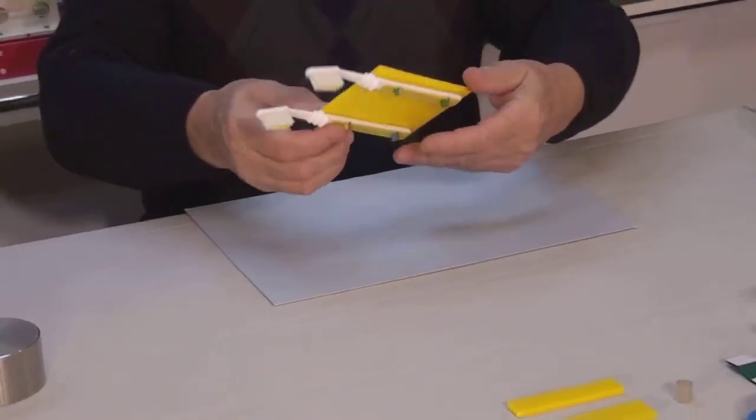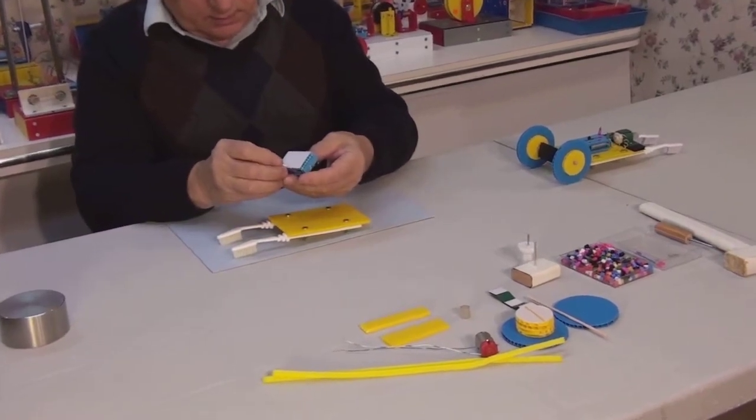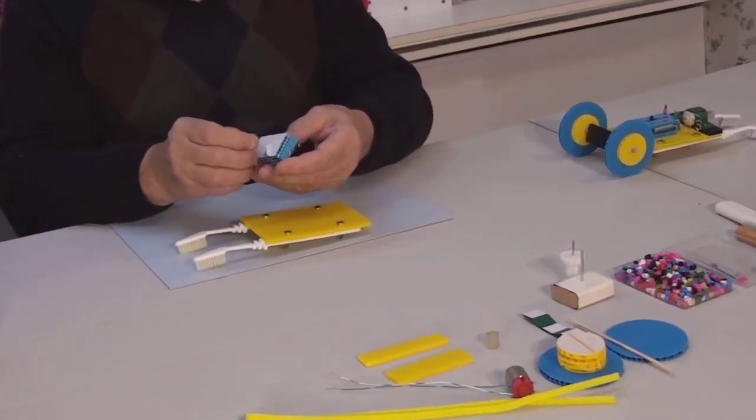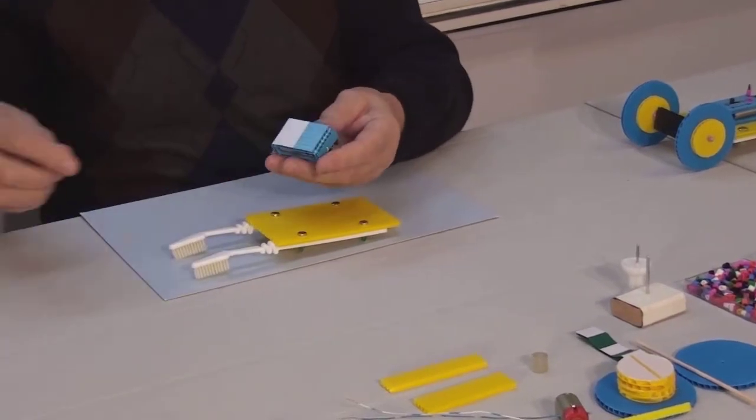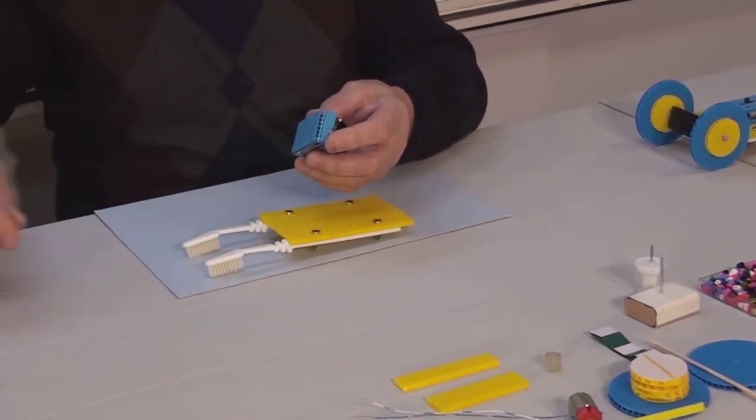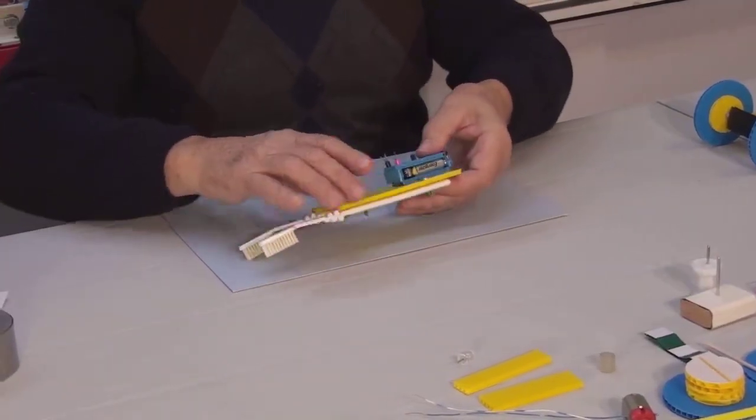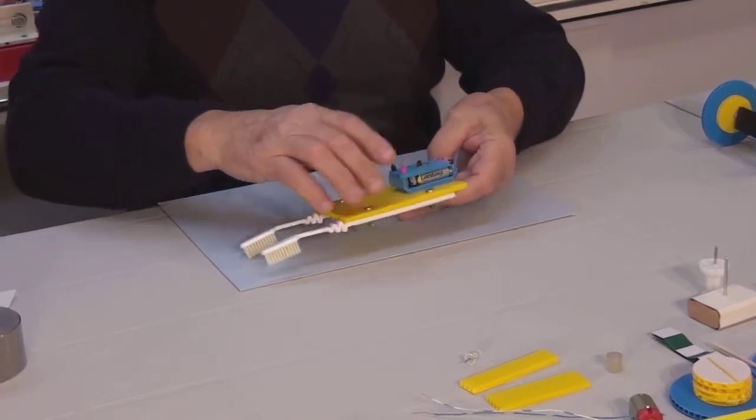It is time to attach the battery. Remove the adhesive from the plastic backing and glue on the battery like so. The side with the longer contacts should be facing the bristles. Press firmly.